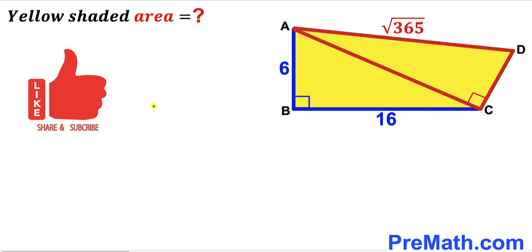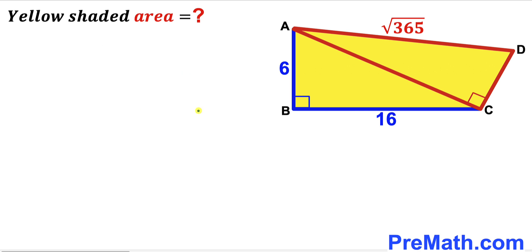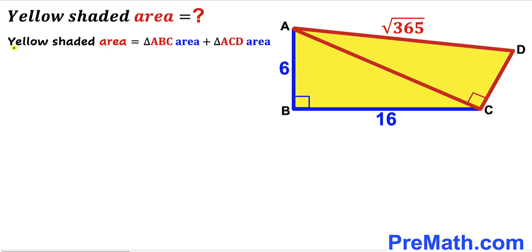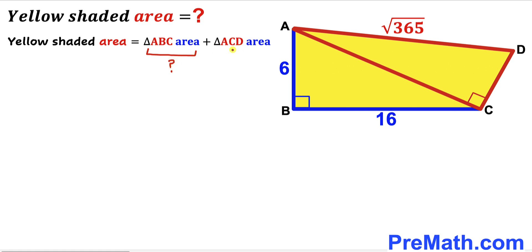Please don't forget to give a thumbs up and subscribe, and keep in mind that this figure may not be 100% true to scale. The area of the yellow shaded quadrilateral ABCD equals the area of triangle ABC plus the area of triangle ACD. So our task is to calculate the area of each of these two triangles.